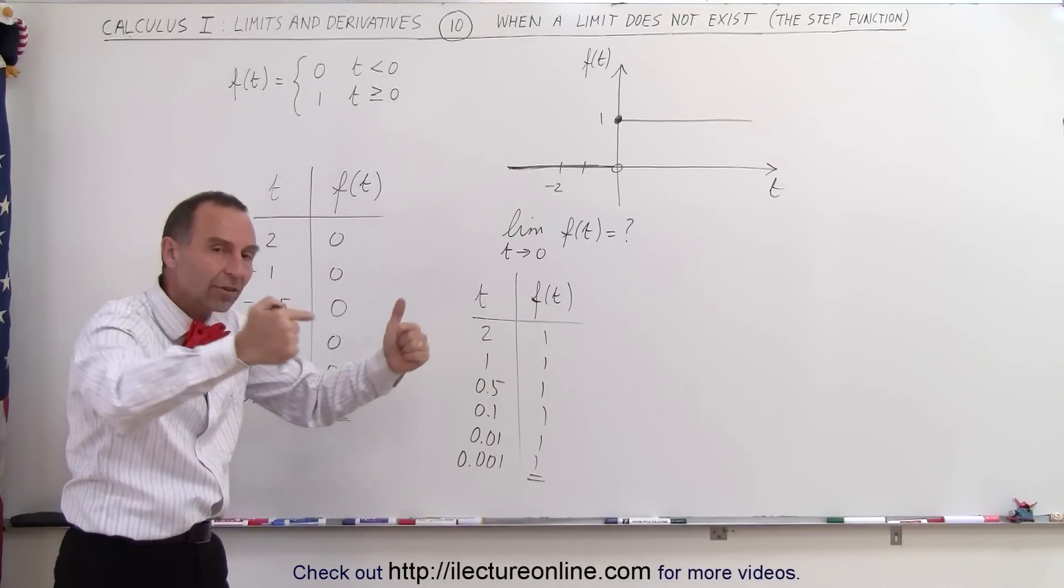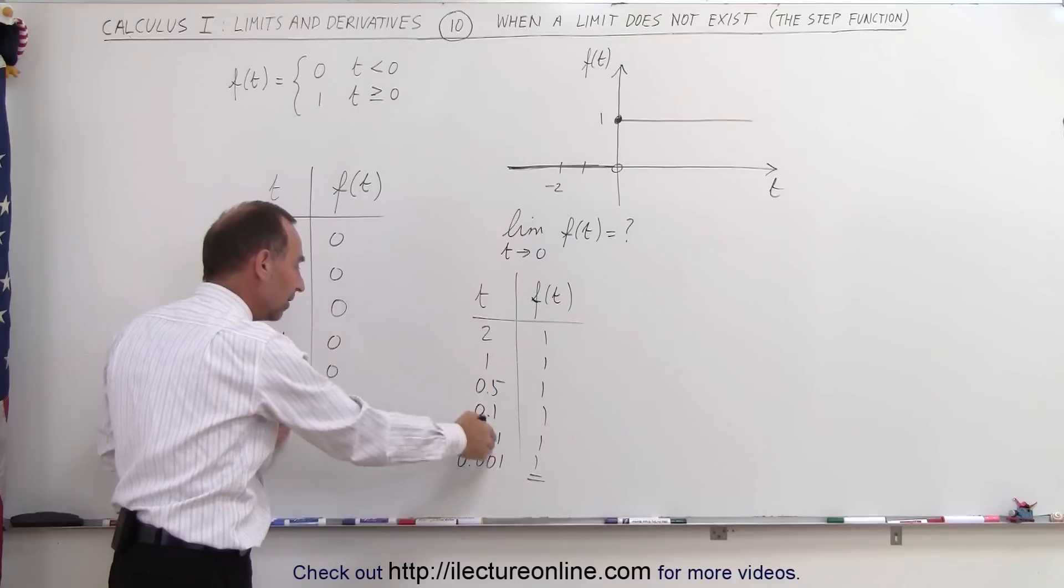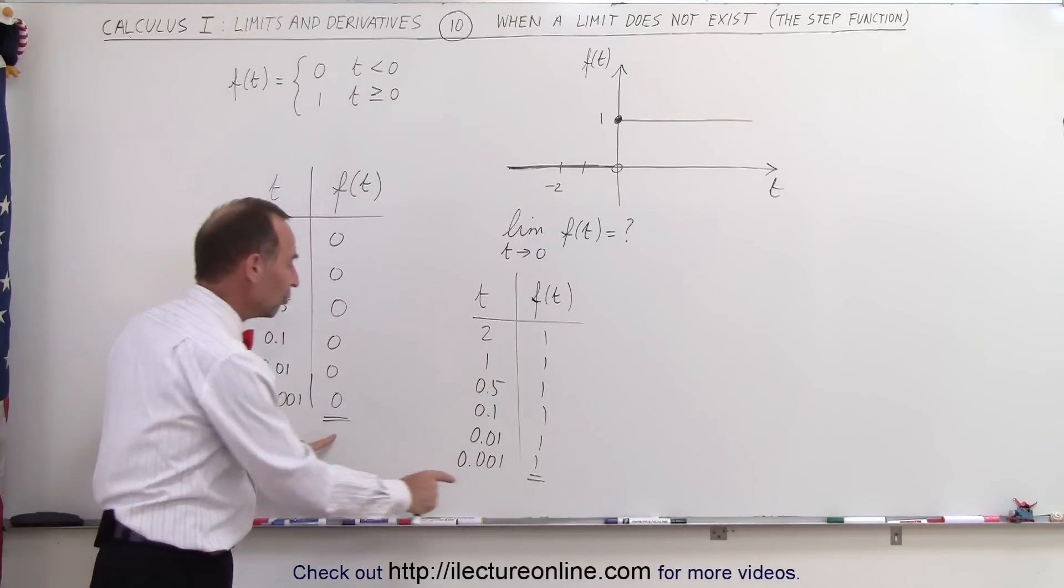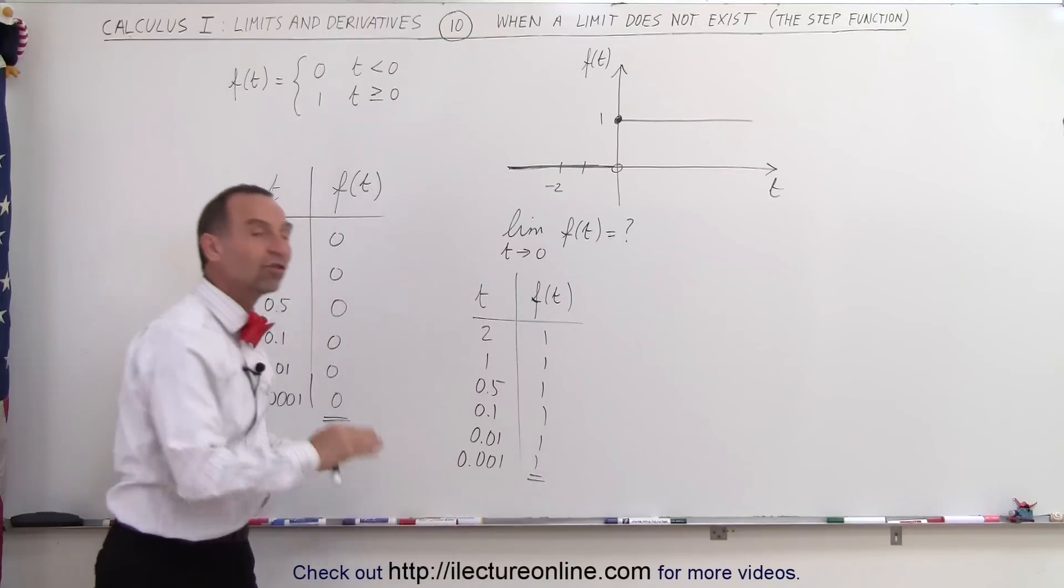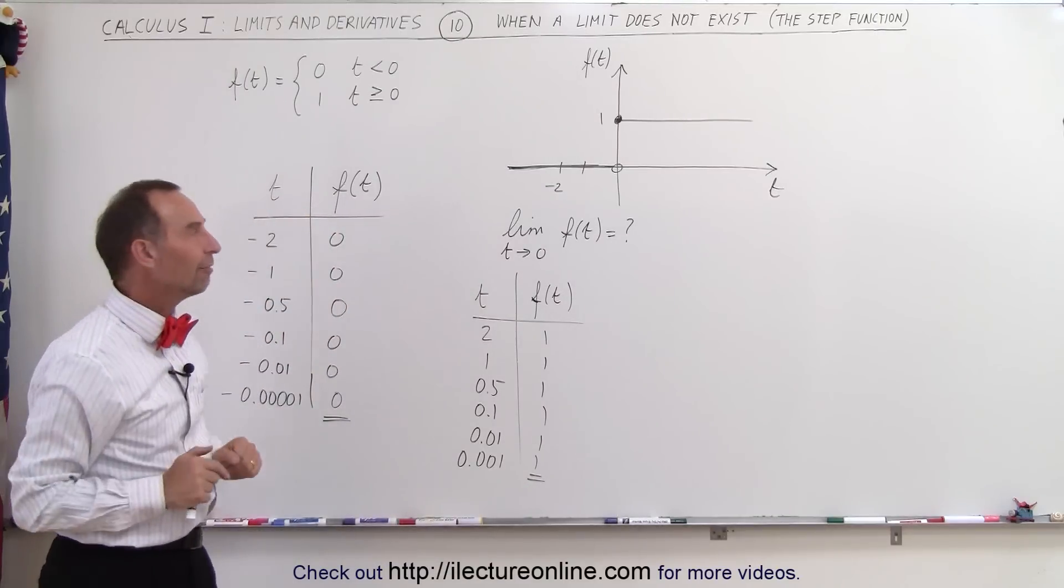So therefore, we can say there's no limit, because on one side we get the result 0, on the other side we get the result 1. If they're different, there is no limit.